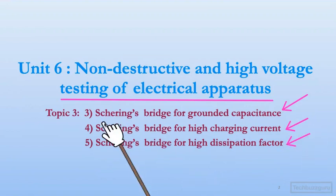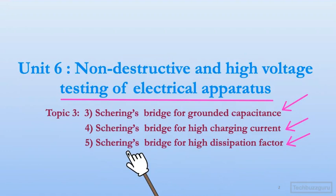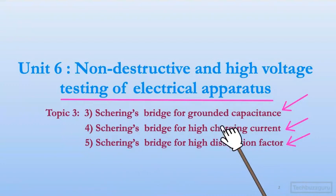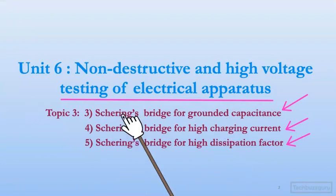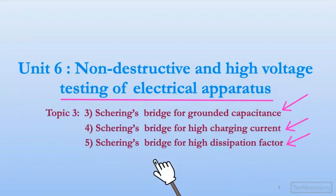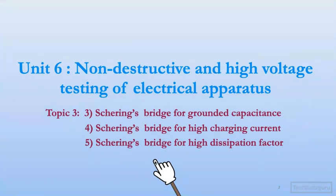Basically these are all Schering bridge methods. In examinations you have to remember which type is asked, because there are four or five different versions of the Schering bridge, so you have to be careful while answering.